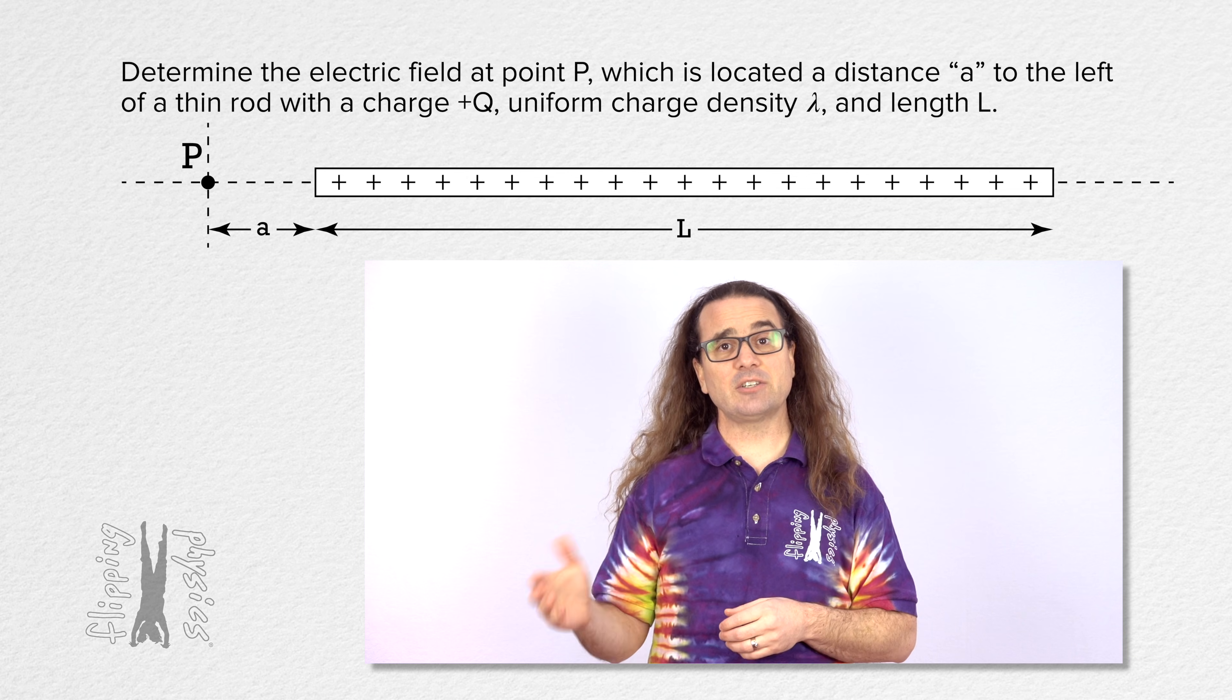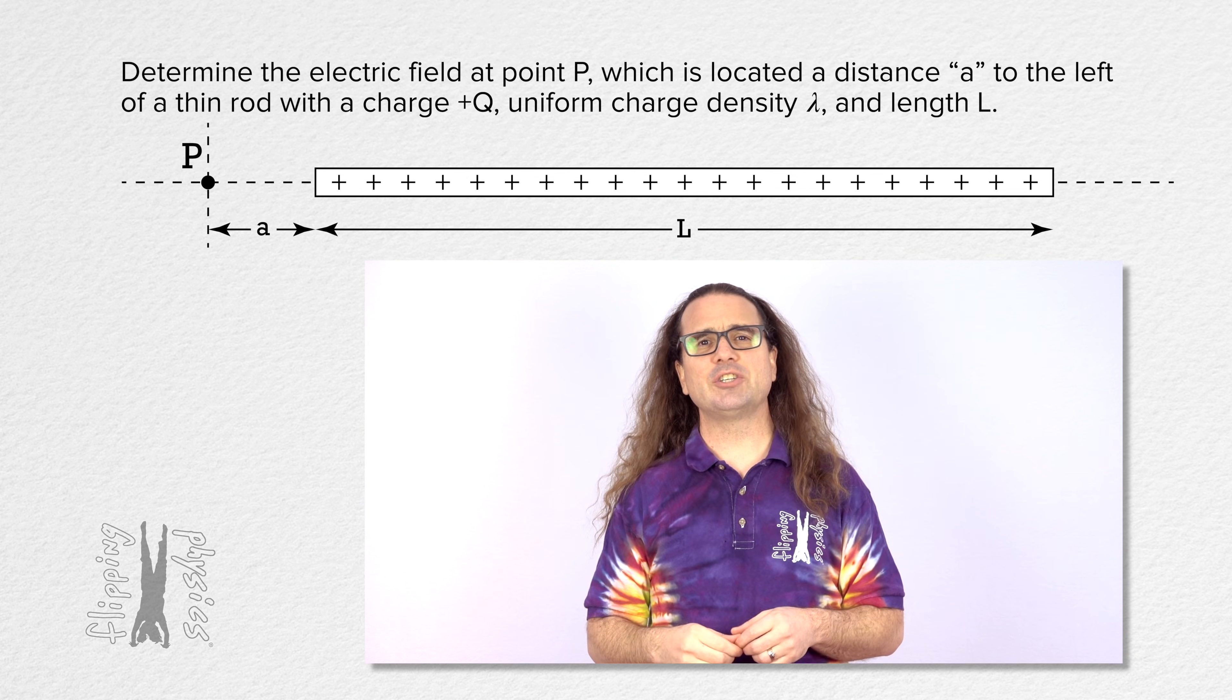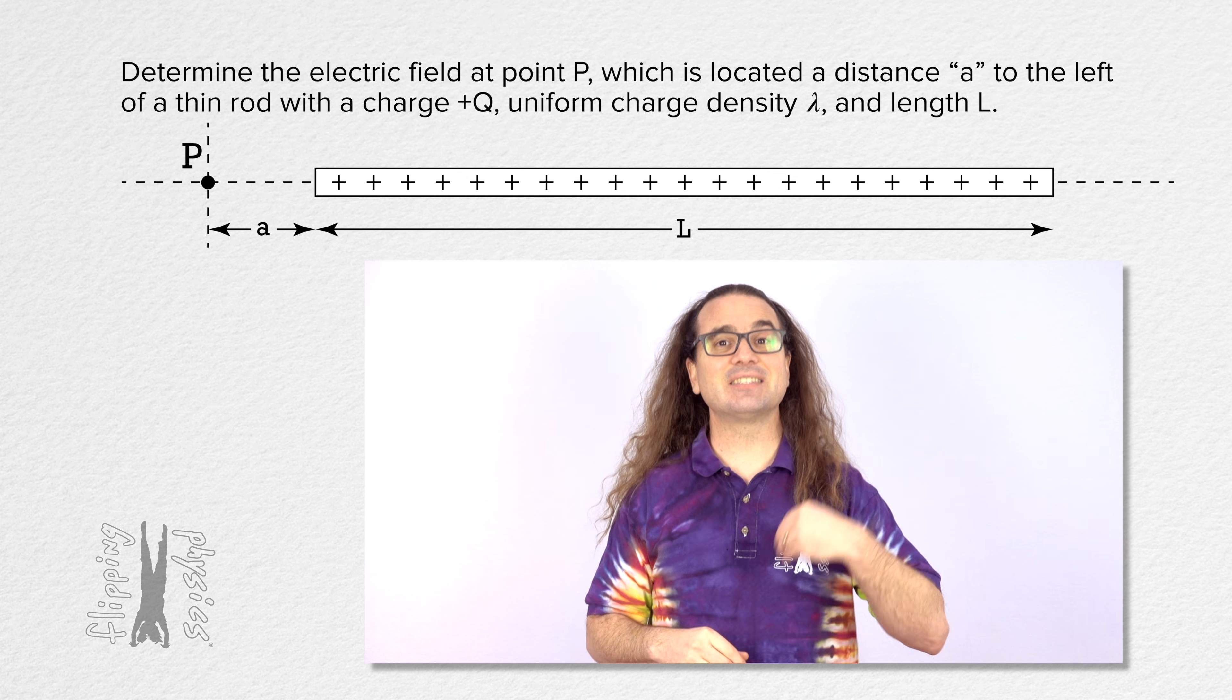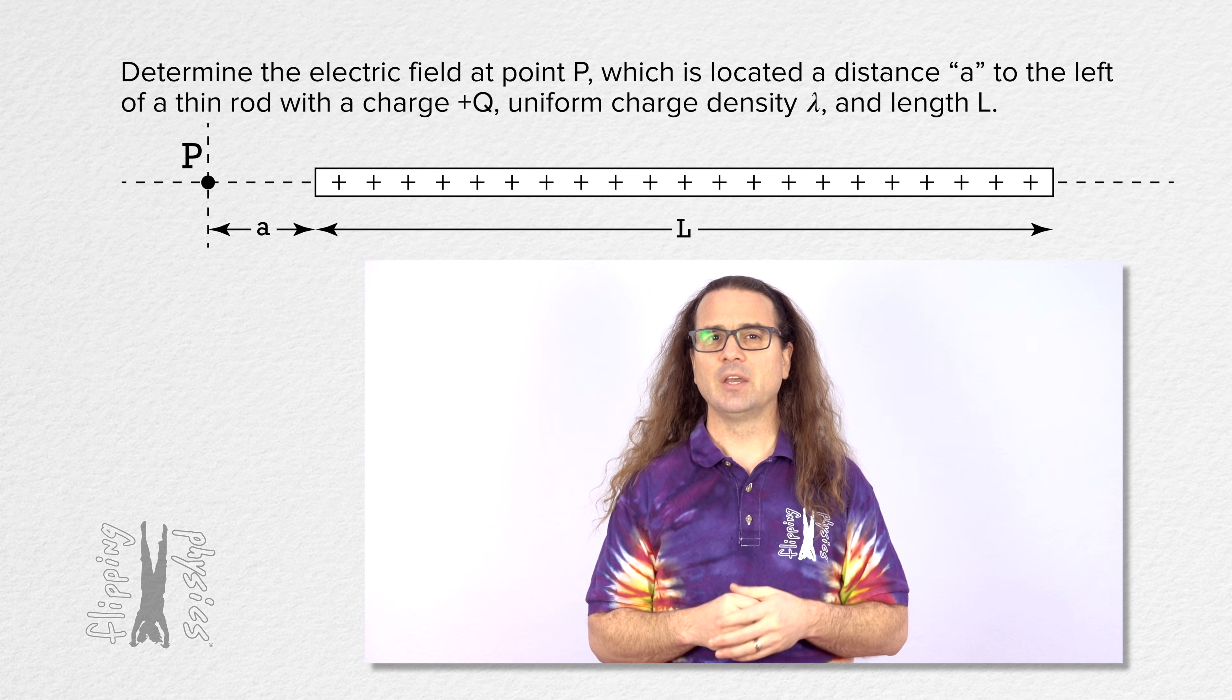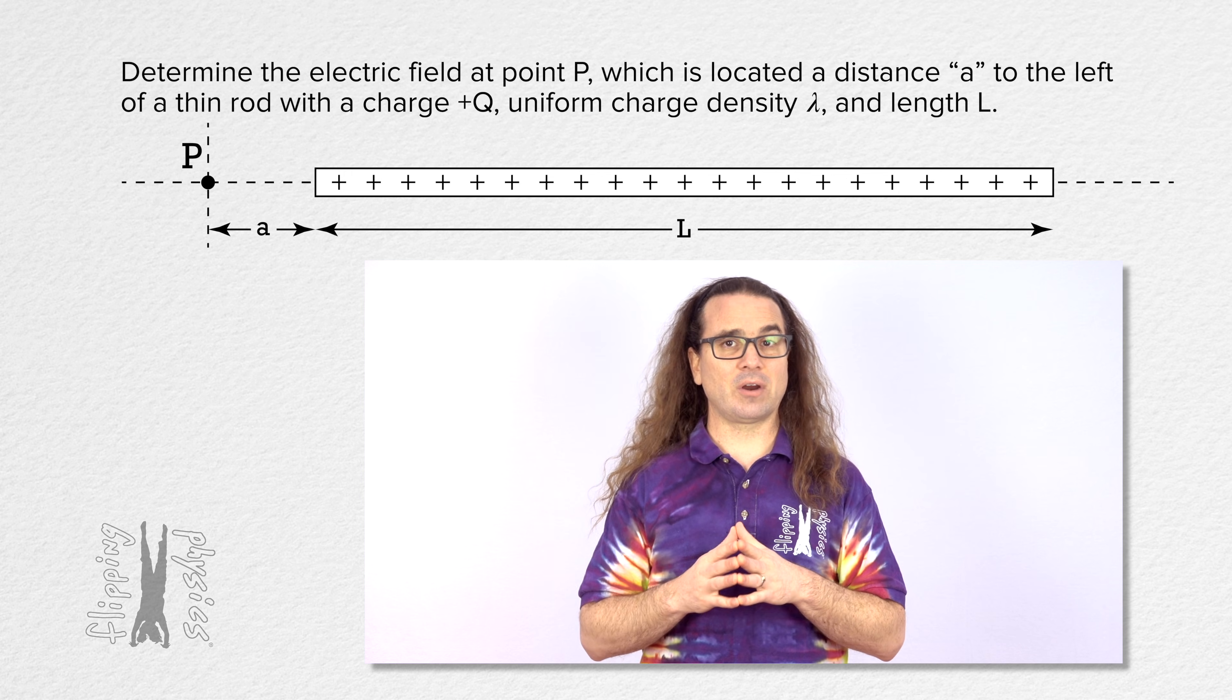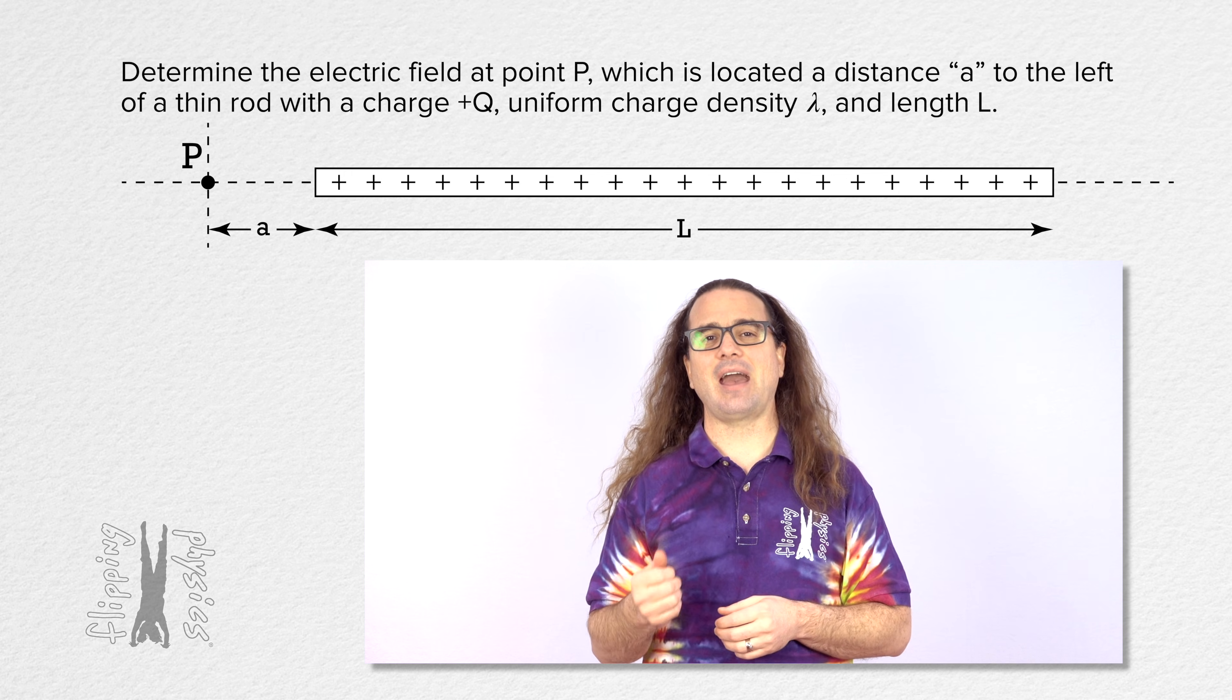Good morning. Let's determine the electric field at point P, which is located a distance A to the left of a thin rod with a charge positive capital Q, uniform charge density lowercase lambda, and length capital L.